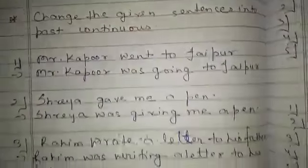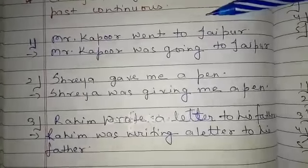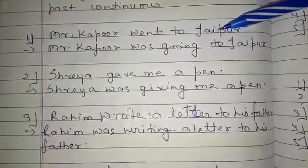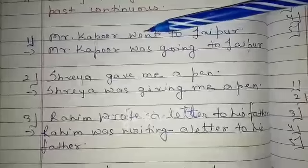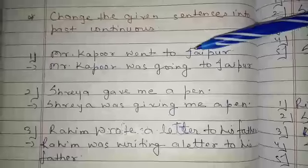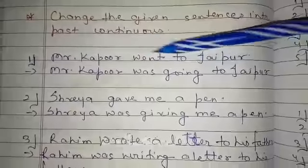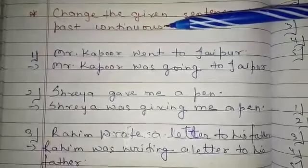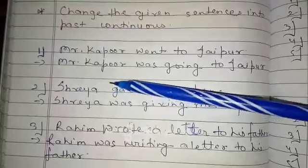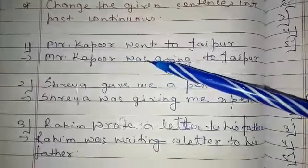Now we have to change the given sentences according to the structure. Our first sentence is: Mr. Kapoor went to Jaipur. This is simple past or past indefinite tense because here it is V2 and there is no helping verb. So the sentence is in simple past or past indefinite form. Now we have to change this sentence into past continuous. The structure is subject plus was or were plus V4 plus object. We will use 'was' because Mr. Kapoor is singular.